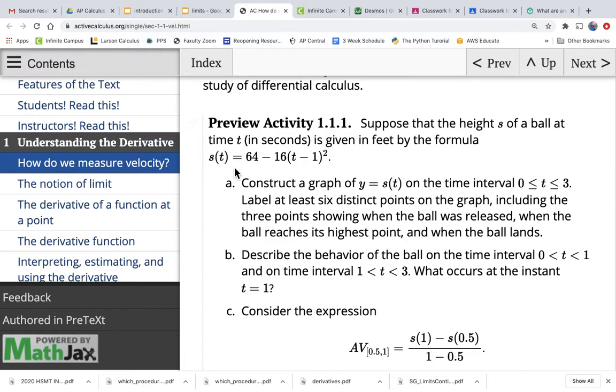And then let it drop to the ground. And we have this function right here, s of t equals 64 minus 16 times the quantity t minus 1 squared. So this is the position of the ball, basically the height of the ball off the ground. And our challenge here is to construct a graph of this position function y equals s of t on the time interval from 0 seconds to 3 seconds.